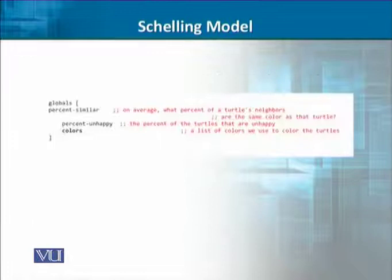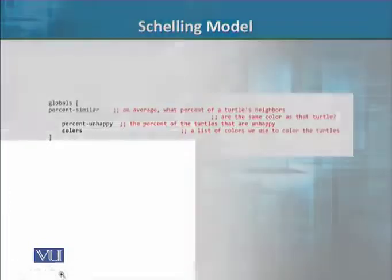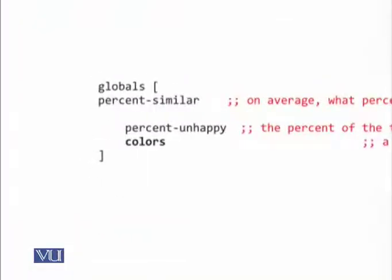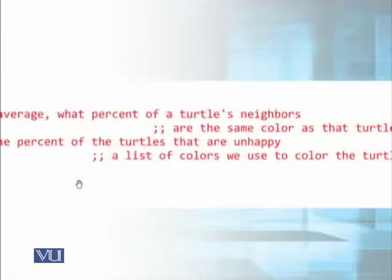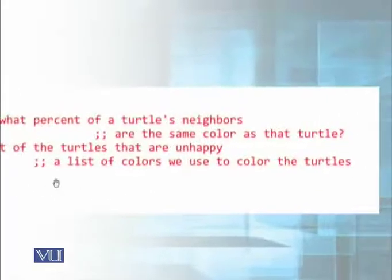What do we need to do? Obviously, our main code is in the setup. In the setup, we have seen the thing that is in the form of a global. We can create another global variable which is colors. What does the colors variable represent? It represents the list of colors that we use to color the turtle.